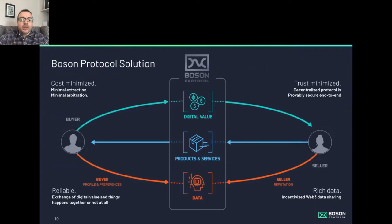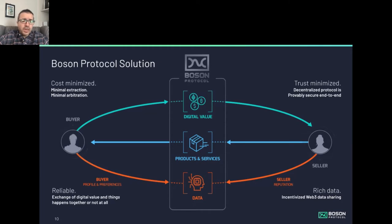Touching on the mechanics of the solution — and there's some really deep game theory behind it — Boson enables this cost-minimized exchange. We are a minimally extractive protocol, which means we take a fee, but it's a small fee on a huge number of transactions. We minimize arbitration using game theory and we also minimize trust. The protocol is provably secure end to end in terms of exchanging the physical item and the digital item, and is reliable — the buyer can rely on the fact that either they will get the item or they will get their money back.